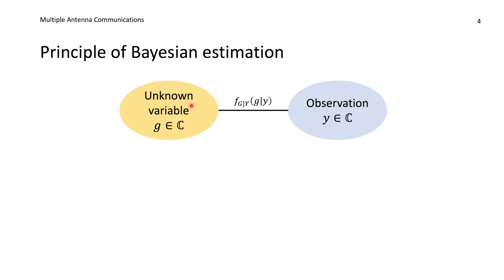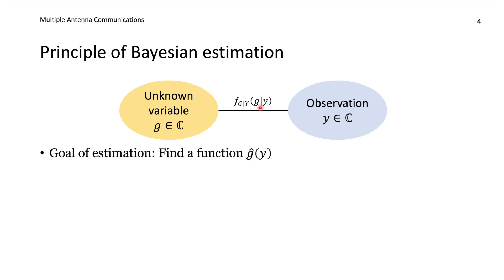The principle of Bayesian estimation is that there is an unknown variable g — I will consider it to be a complex variable. There is an observation y, written here as a scalar but it could also be a vector. There is some connection between them determined by a conditional probability density function: the PDF of g when we have observed the realization of y. Based on the observation of y, we ask how g will be distributed. The goal of estimation is to find a function g-hat — same variable but with a hat showing it is an estimate — that takes our observation and produces a guess of what g should be.